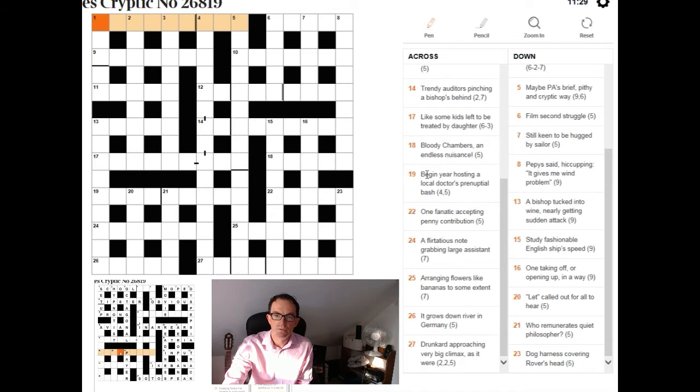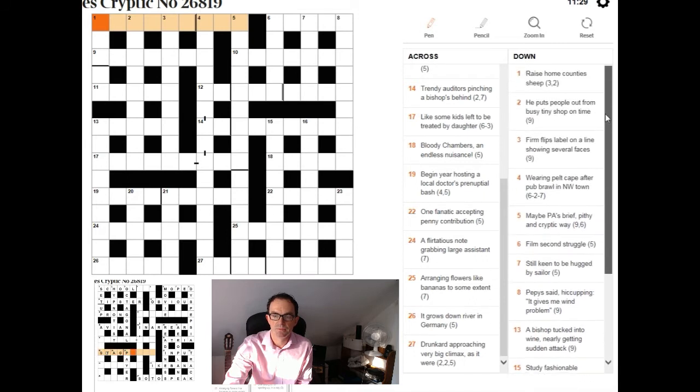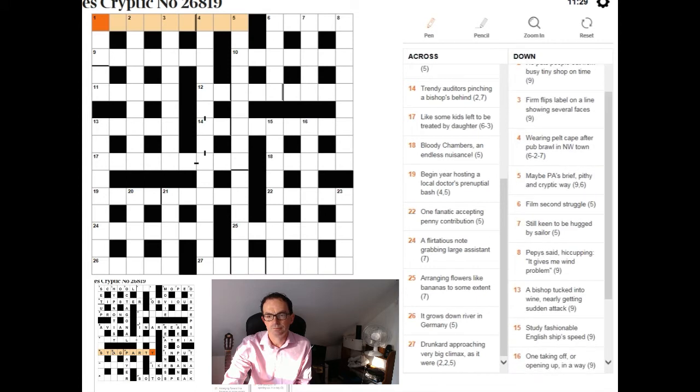Now let's spend a moment or two having a look at four and five down because these are obviously hugely important to cracking this puzzle quickly. Neither of them are desperately easy to be honest. Let's look at four down first. So wearing pelt cape after pub brawl in North West Town. I hope from the practice we've been doing over the last couple of weeks that when you look at that clue you would think that the definition is North West Town. It's hard to see how 6-2-4 especially hyphenated could mean wearing or wearing pelt.